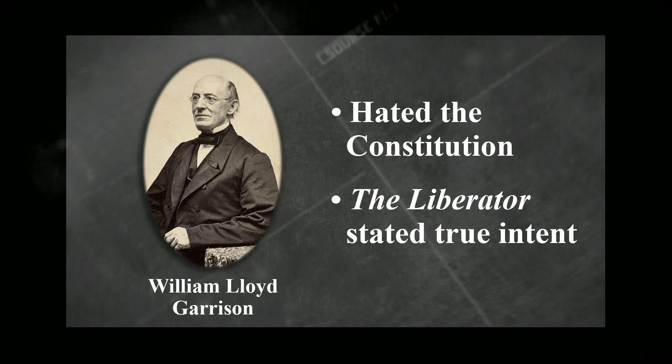The most notorious leader of the abolitionists was a man by the name of William Lloyd Garrison. There were two prime examples of his motivation. First, he openly hated the Constitution — he was not interested in amending it to abolish slavery; he wanted it destroyed. You can imagine the reaction of the people who may have wanted to abolish slavery but loved the Constitution. They started to resist the abolitionist movement as a result. There were other outrageous acts as well that polarized the people and exasperated any idea of a peaceful solution.